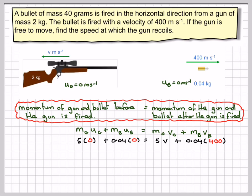So this side will be equal to 0, and therefore take this over to the other side and multiply by 0.04. We're going to have that 5v is equal to minus 16, and therefore v will be equal to minus 16 divided by 5, which is minus 3.2 meters per second.